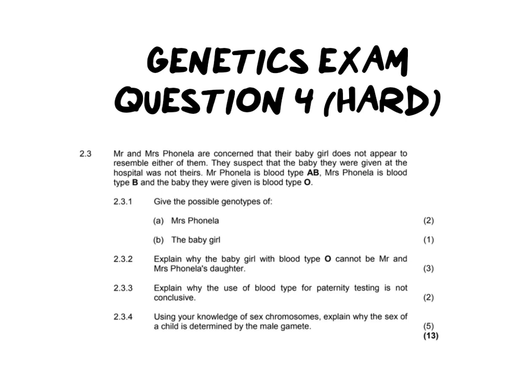I also chose this question because blood groups are quite a tricky topic, considering that they combine two different kinds of dominance at the same time. The question states that Mr. and Mrs. Fonella are concerned their baby girl does not appear to resemble either of them and suspect the baby given at the hospital is not theirs. Mr. Fonella is blood type AB, Mrs. Fonella is blood type B, and the baby they were given is blood type O. Before going further, we're going to work out the possible alleles for each individual.